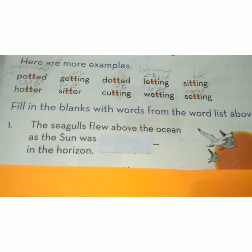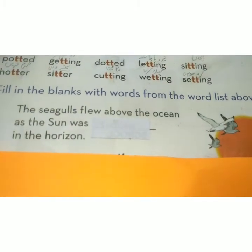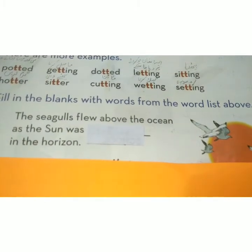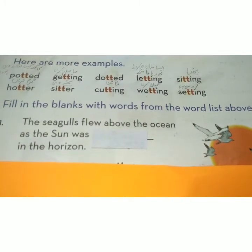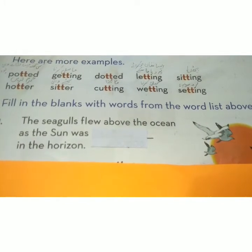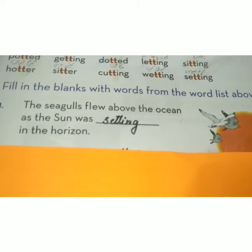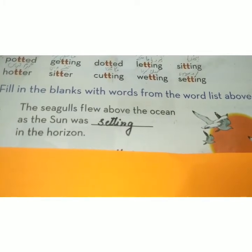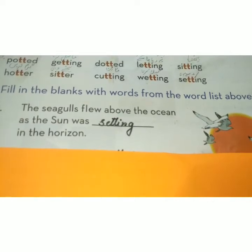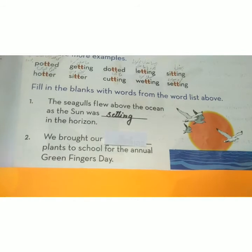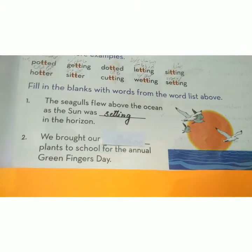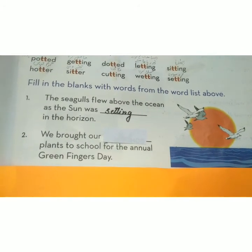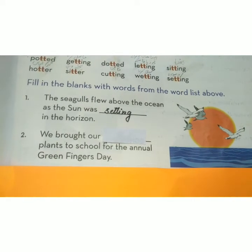Number 1: The seagulls flew above the ocean as the sun was ___ in the horizon. We will write 'setting.' The seagulls flew above the ocean as the sun was setting in the horizon — جب افق میں سورج غروب ہوا۔ Number 2: We brought our ___ plants to school for the annual Green Fingers Day.